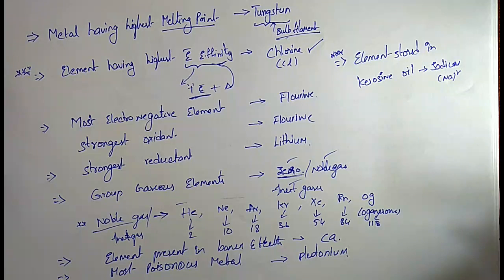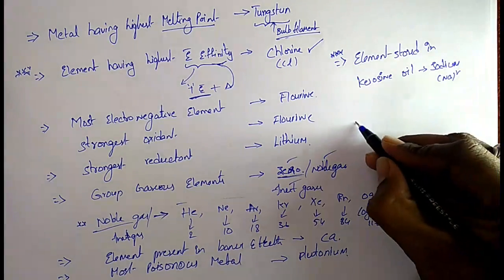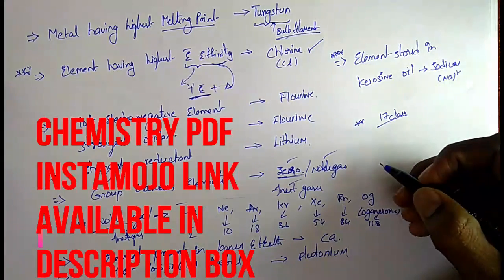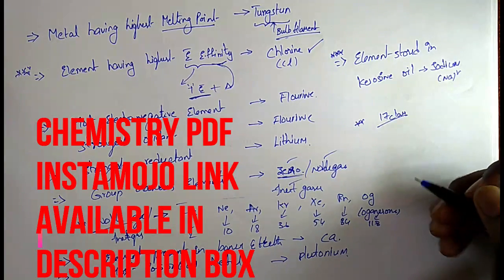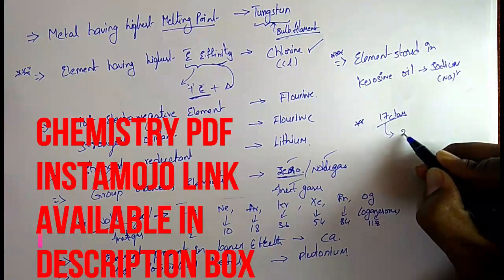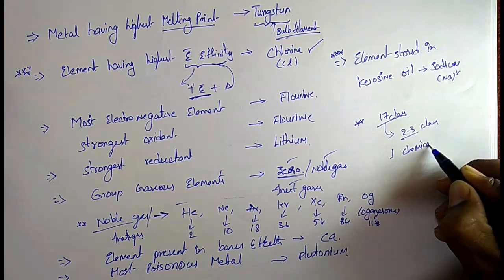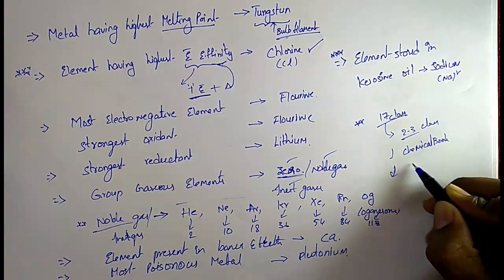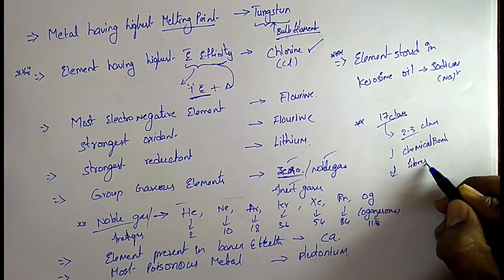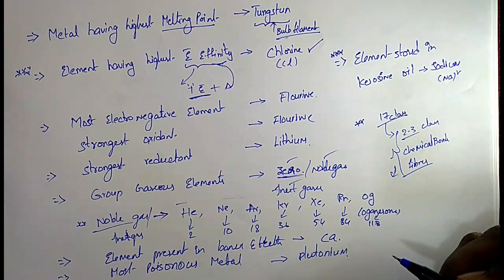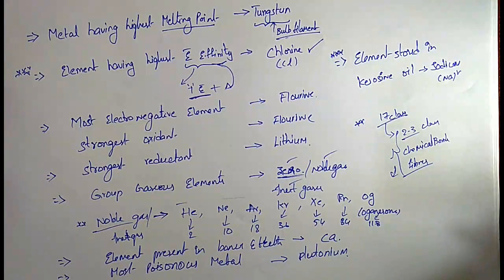These are the very important highest and lowest properties of elements. We have now totally completed 17 classes. There are nearly 2 to 3 classes remaining — chemical bonding and fibers/fabric — and then chemistry will be totally completed. Thank you friends.